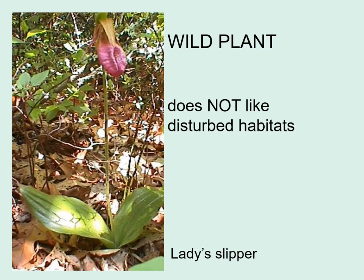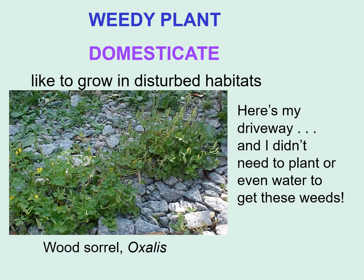A wild plant can be differentiated from a weed and a domesticated plant because wild plants do not like disturbed habitats — a place where somebody has dug up the ground, like in a garden. That's why gardeners who manage to grow something like the wild lady slipper are so proud of themselves, because they're growing a plant that does not want to grow in a disturbed habitat. Weedy plants and domesticates, on the other hand, like to grow in disturbed habitats. Here's my driveway, and you can see weedy wood sorrel — I didn't need to plant or even water to get these weeds.